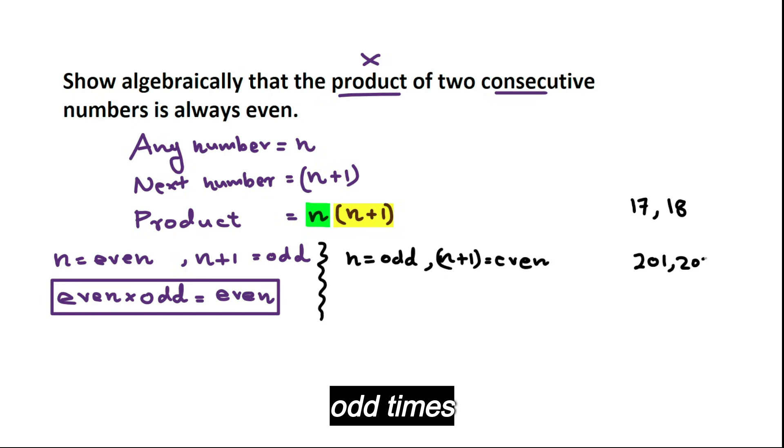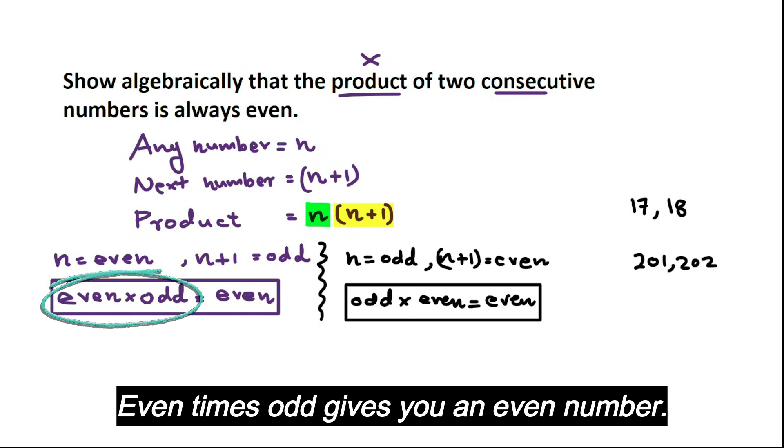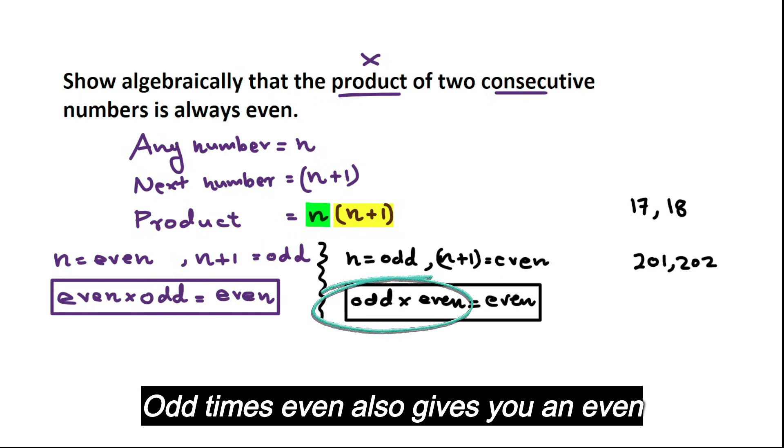Now, what conclusion can we come from this one? Even times odd gives you an even number. Odd times even also gives you an even number.